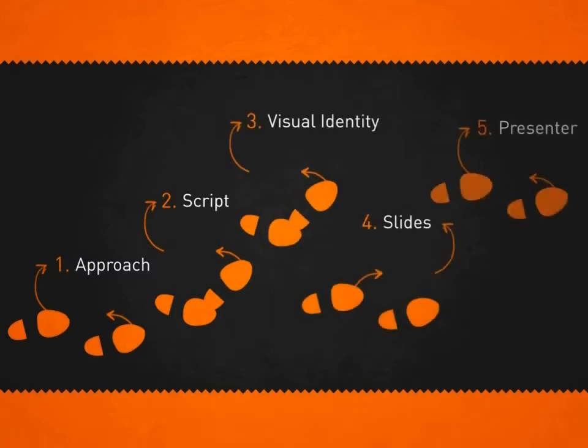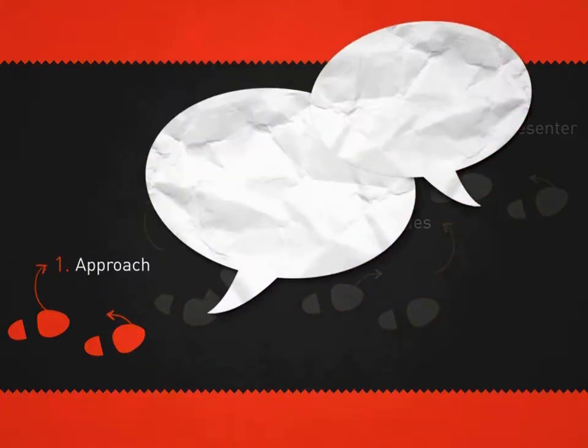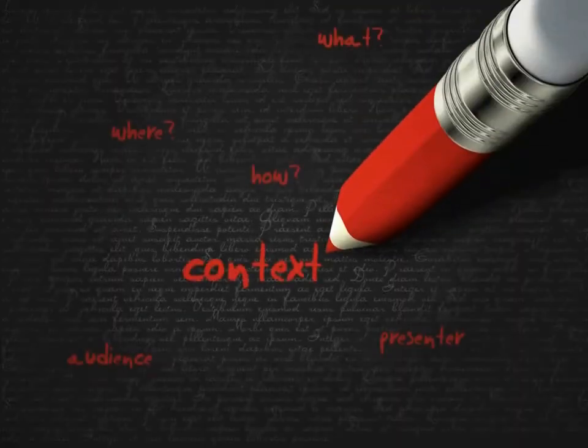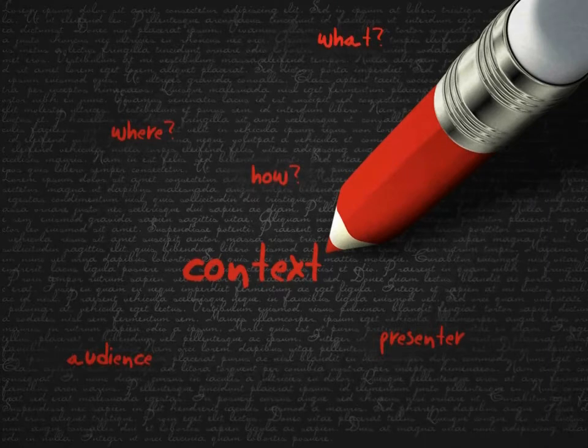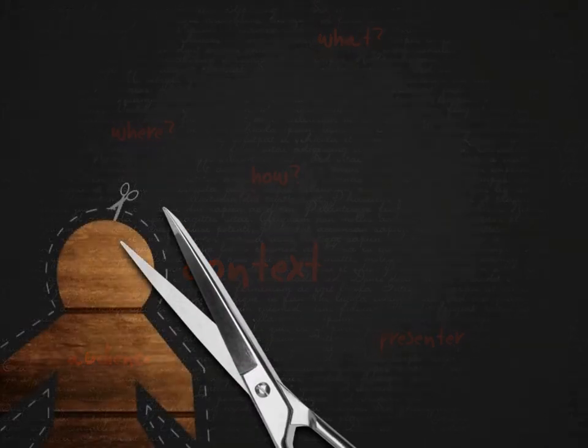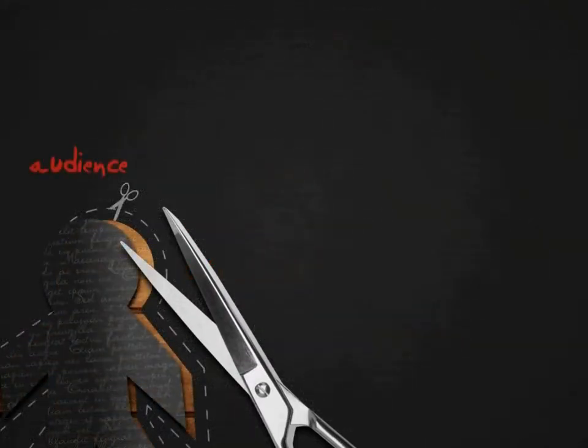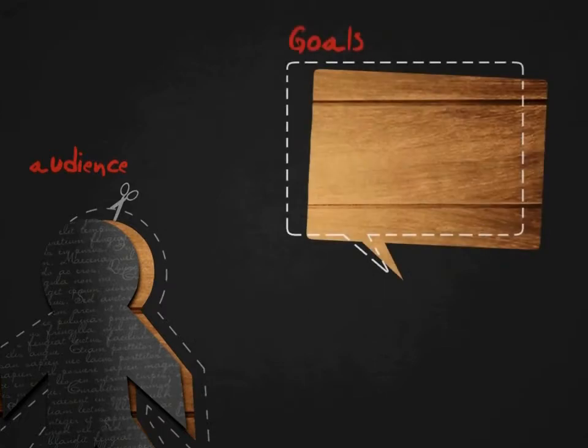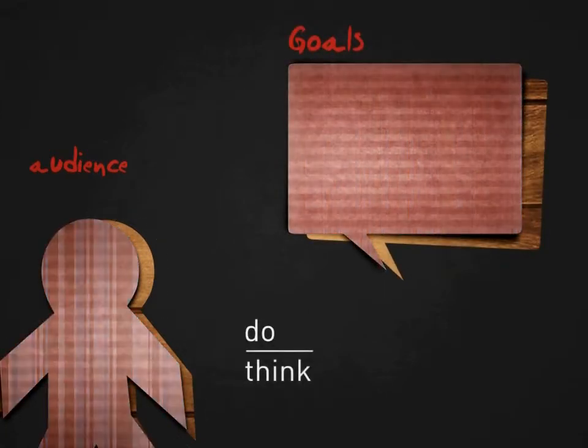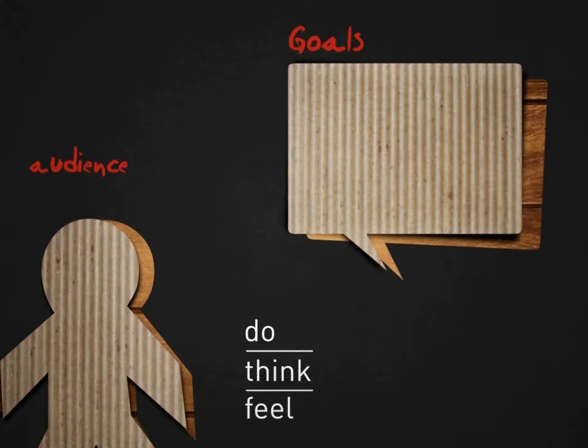Here are our five steps for getting the job done. The Approach: With your input, we will define the context of the presentation and the setting in which it will be performed. Establish your audience's profile clearly. Determine your goals: what do you want your audience to do, think, or feel at the end? Once this is clearly defined, we'll move on to the script.